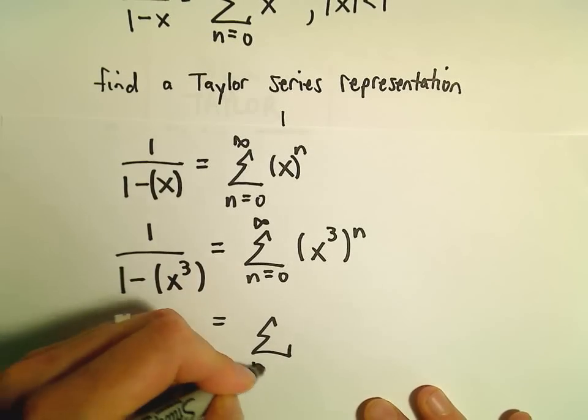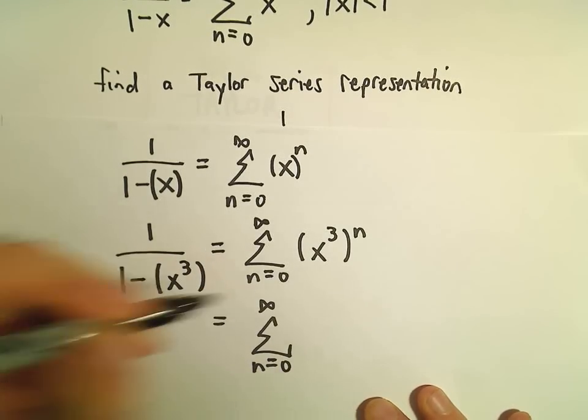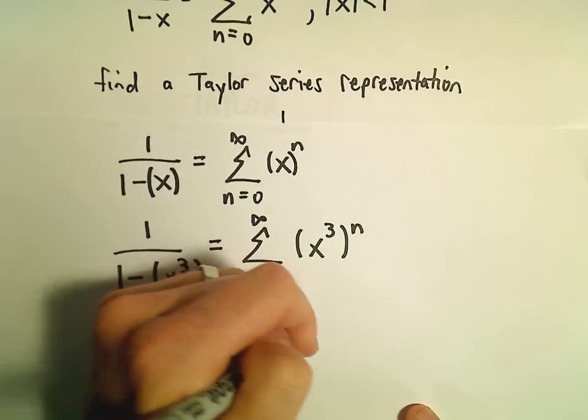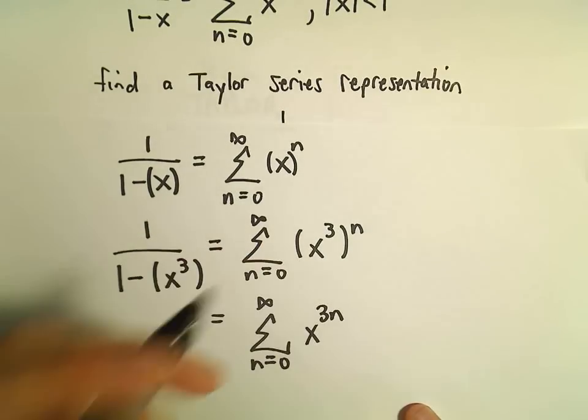And now we've got our series expansion: the sum from n=0 to infinity of x^(3n).